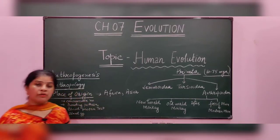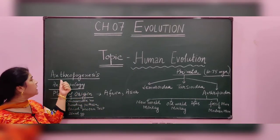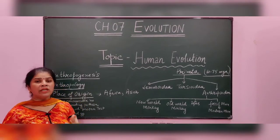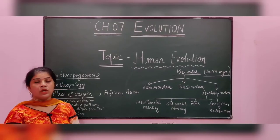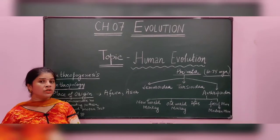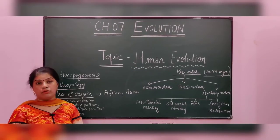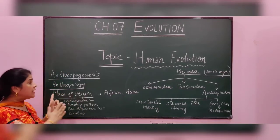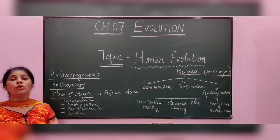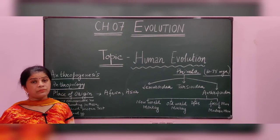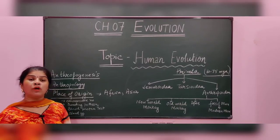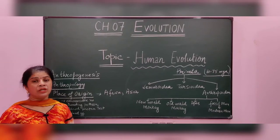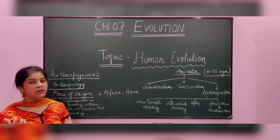The process of human evolution is known by the name anthropogenesis. Human evolution is not just a biological evolution but it is also a cultural evolution. The study of human evolution is known by the name anthropology. And paleoanthropology means the study of ancient human evolution with the help of fossil records.